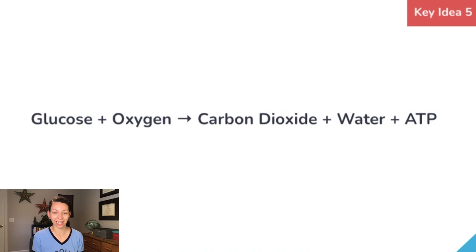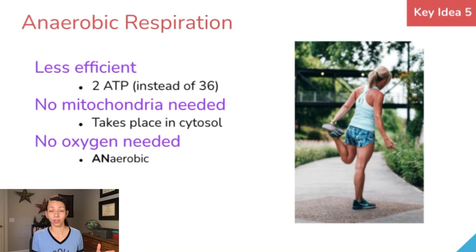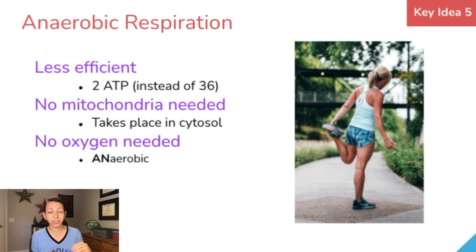Anaerobic respiration does occur in our cells as well and in many other cells on earth. Nearly all existing organisms perform part of this — which is glycolysis — but it's less efficient. It produces only two ATP molecules instead of the 36 produced in aerobic cellular respiration. There's no mitochondria needed, so it can take place in the cytosol of the cell, and it doesn't need any oxygen — it's an anaerobic process.